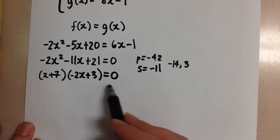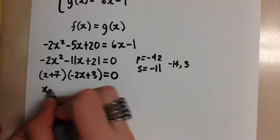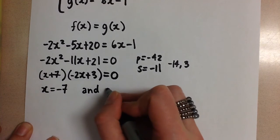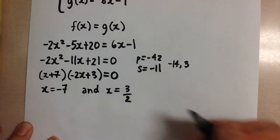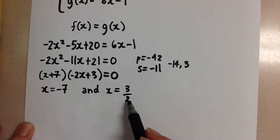Now from this factored form, we can find our two x values to satisfy this equation will be x equals negative 7 and x equals positive 3 over 2. But these only give us the two x values that would solve the system of the two equations.